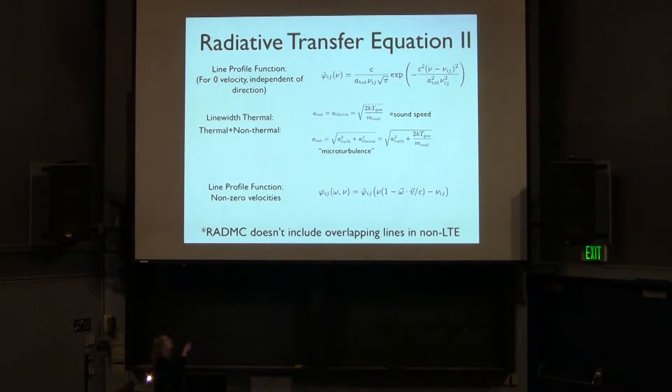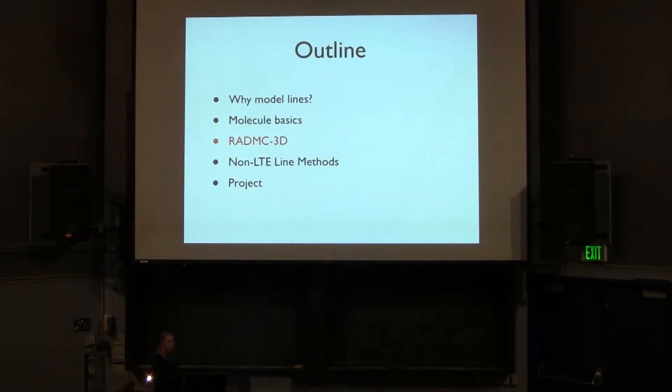Now, one note here is that RADMC, which we're going to be talking about today, is doing the simplest possible thing and is not including overlapping lines. So hopefully you're looking at one line at a time. You don't care if it's interacting with its neighbor. And hopefully, for standard lines like 1 to 0, that's not happening.